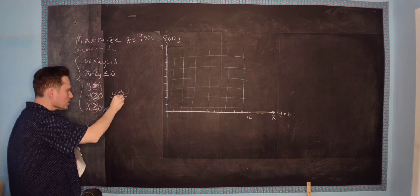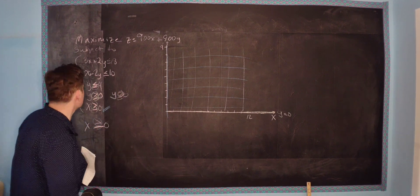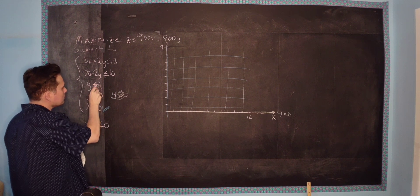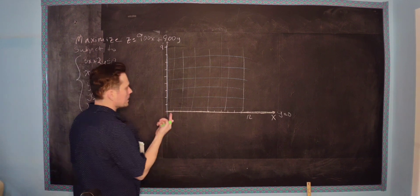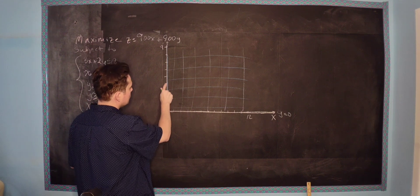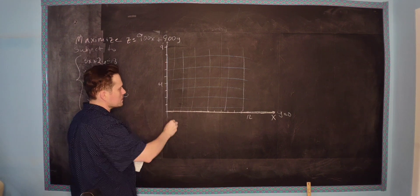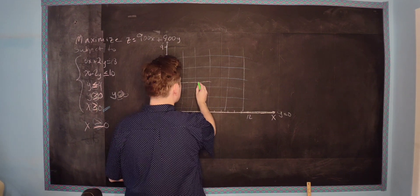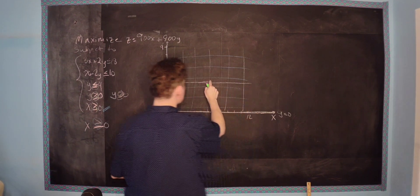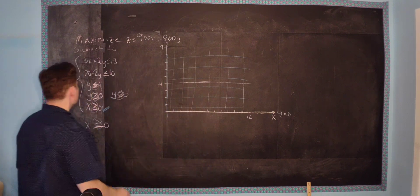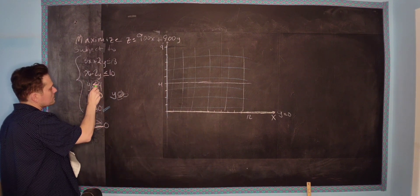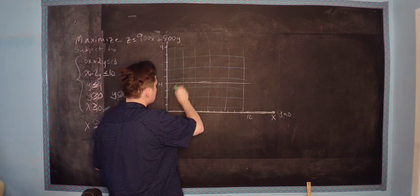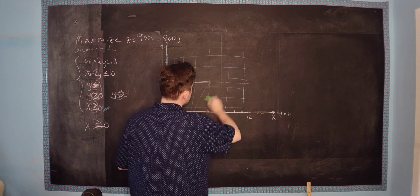Each symbol in each inequality tells you something. Now look at this one: y is less than or equal to 4. The equal-to part says you're going to draw a line through y equals 4 — so counting up 1, 2, 3, 4 — this line right here is y equals 4. Then the less-than part means you shade below that line, which I'll indicate with these slanted lines.